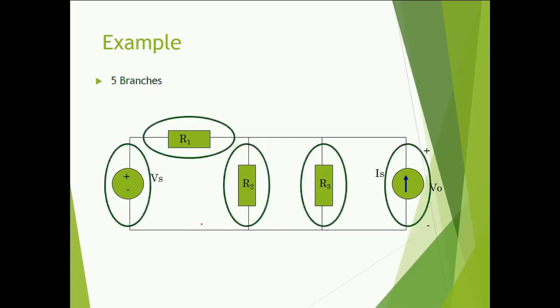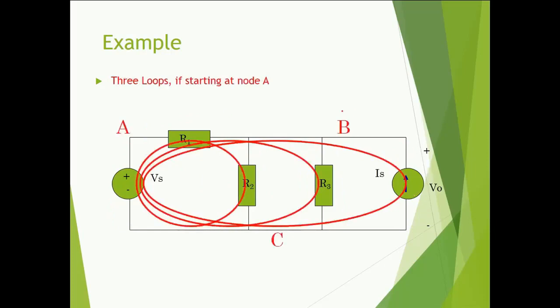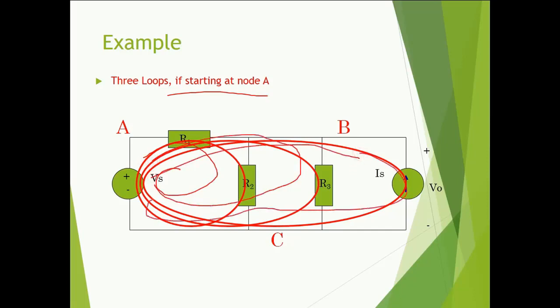Talking about branches: this is branch one, branch two, branch three, branch four, and branch five. A branch is simply a segment in which we have the elements. Talking about the loop starting from node A: this is loop one, this is loop two, and the last one is loop three. So these are the loops starting from node A.